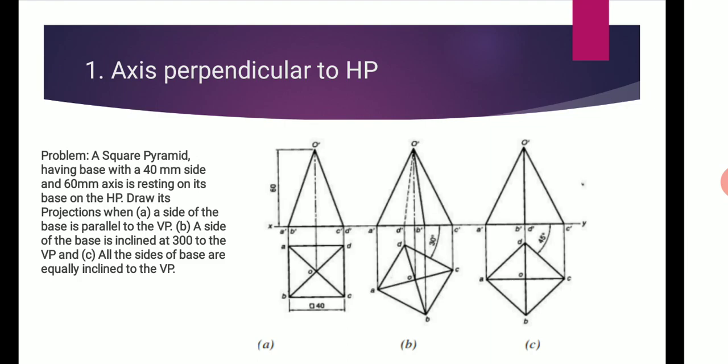Assume solids standing on a plane which is making an inclination. If it is inclined to HP, assume it standing on HP. If it is inclined to VP, assume it standing on VP. If standing on HP, its top view will be the true shape of its base or top. If standing on VP, its front view will be the true shape of its base or top.